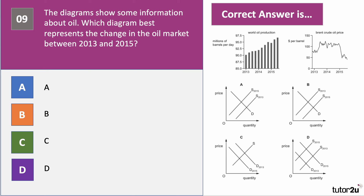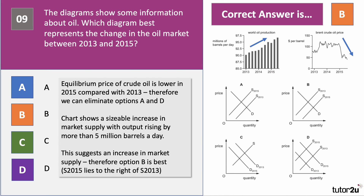The right answer to question nine is B. The equilibrium price of crude oil is lower in 2015 than in 2013, so we can eliminate options A and D which show an increase in equilibrium price. The chart also shows a sizeable increase in market supply — production increasing by probably more than five million barrels a day. Therefore the best option is B: an outward shift of the supply curve which causes the price to fall.